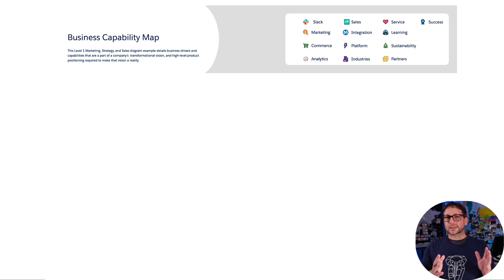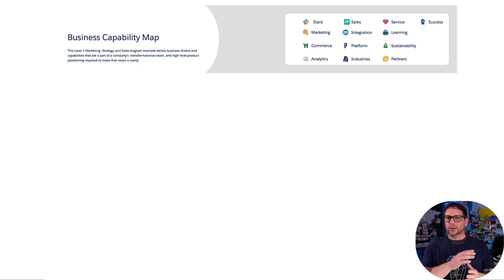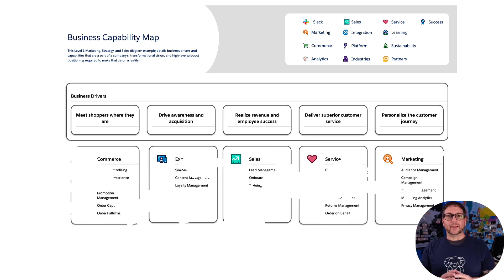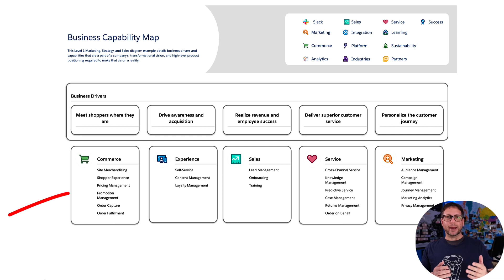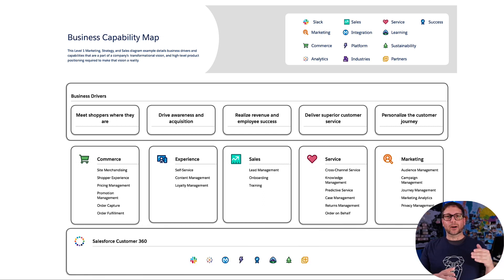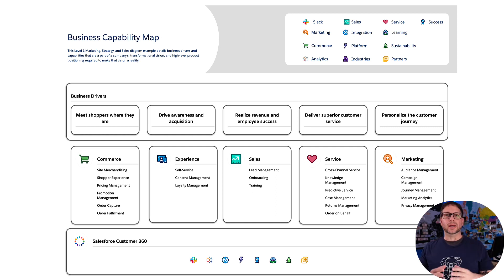This is a business capability map for a retail commerce digital transformation project. At the top, we can see our business drivers. Under those, we've got our related capabilities, which have some attributes, but we're not giving away a lot of detail — maybe going just one level down. And then below that on the bottom, we've got our Salesforce platform capabilities that can enable the business capabilities.